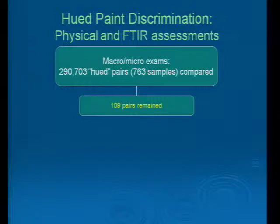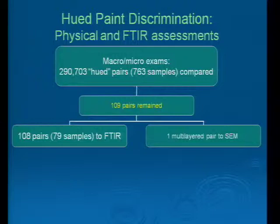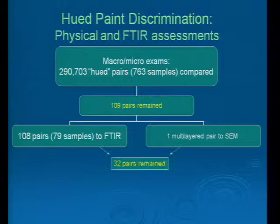108 of those pairs, constituting 79 samples, were brought forward to FTIR. One pair was brought forward to SEM because the layer structure was too complicated to assess up to this point. Then from that FTIR group and that one pair in SEM, 32 pairs remained. So we've gone from 290,000 pairs to 109 to 32, just based on visual microscopic and FTIR.